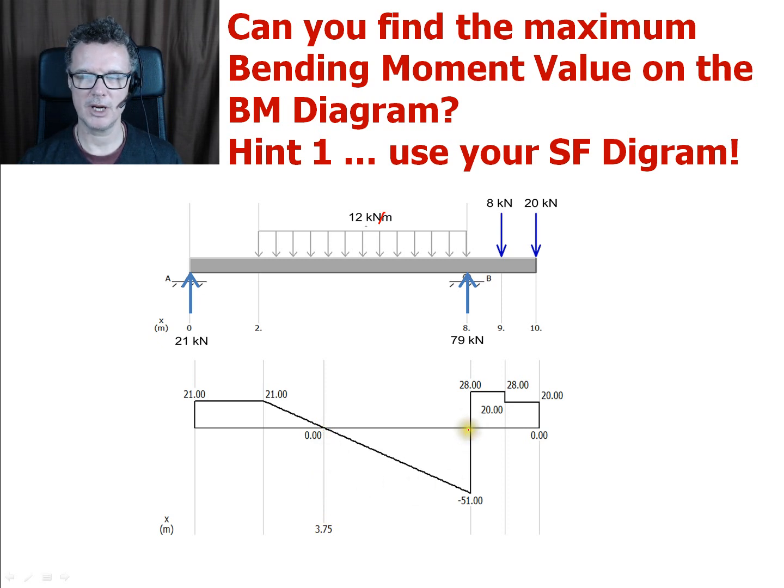We could imagine perhaps we're going to get one here as well because it's cutting to zero, although this is a discontinuous line whereas this one's a continuous cut.